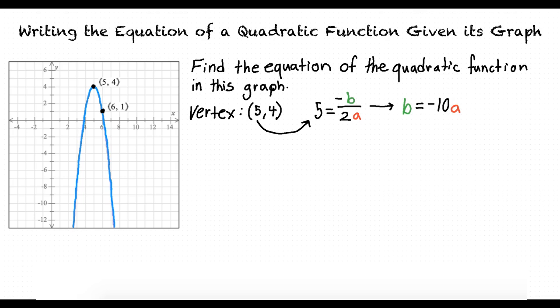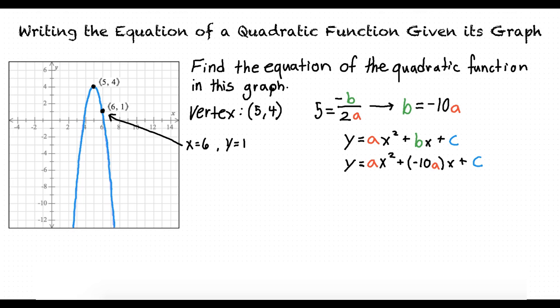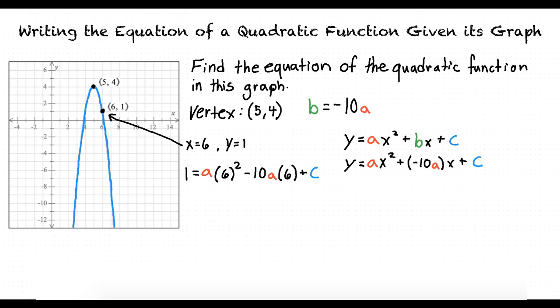Now that we know that b is equal to negative 10a, we can substitute that value into our quadratic function form. Now we make use of the other point shown by our graph, which has the coordinate point (6, 1). This coordinate point has an x value of 6 and a y value of 1. We can substitute the x and y value of this coordinate into our newly formed quadratic equation so that we can solve for the value of c in terms of a. Isolating the c value, we find that c is equal to 1 plus 24a.